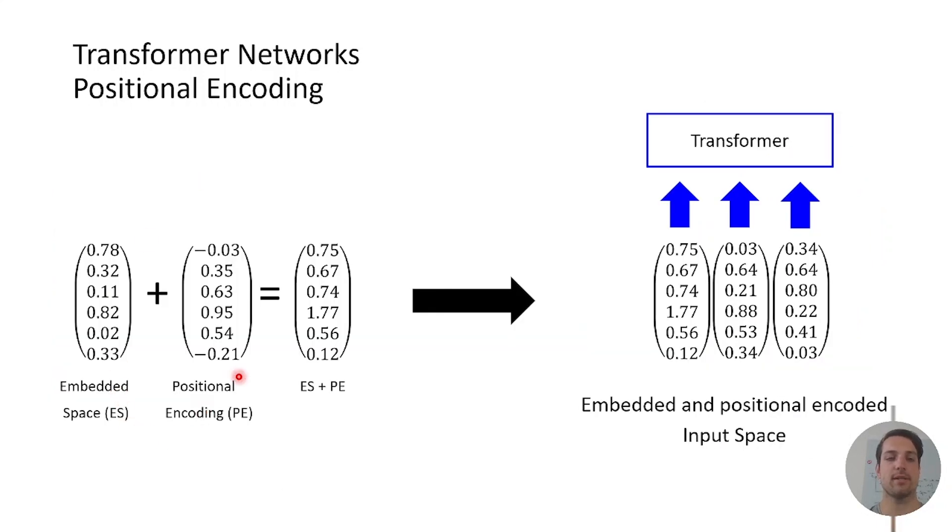This is shown here schematically. This can be a typical signal which is added and the result of the embedded space and the positional encoding is then put into the transformer and the model can learn the positional information. So this is quite useful.